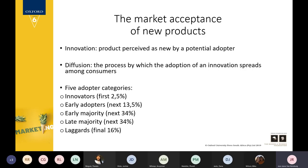Looking at the slides, there's another important concept: when new products are introduced into the market, different consumers react differently. There are five different categories of consumers. Some people love new innovations and want to be the first to try a new product — they can't wait for it to come out.